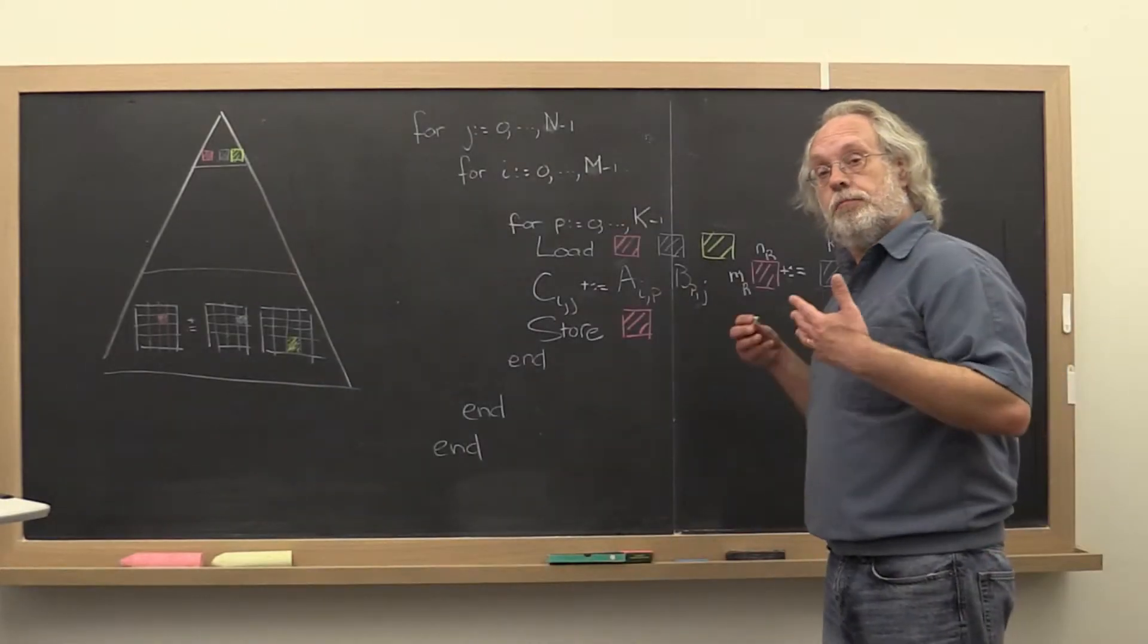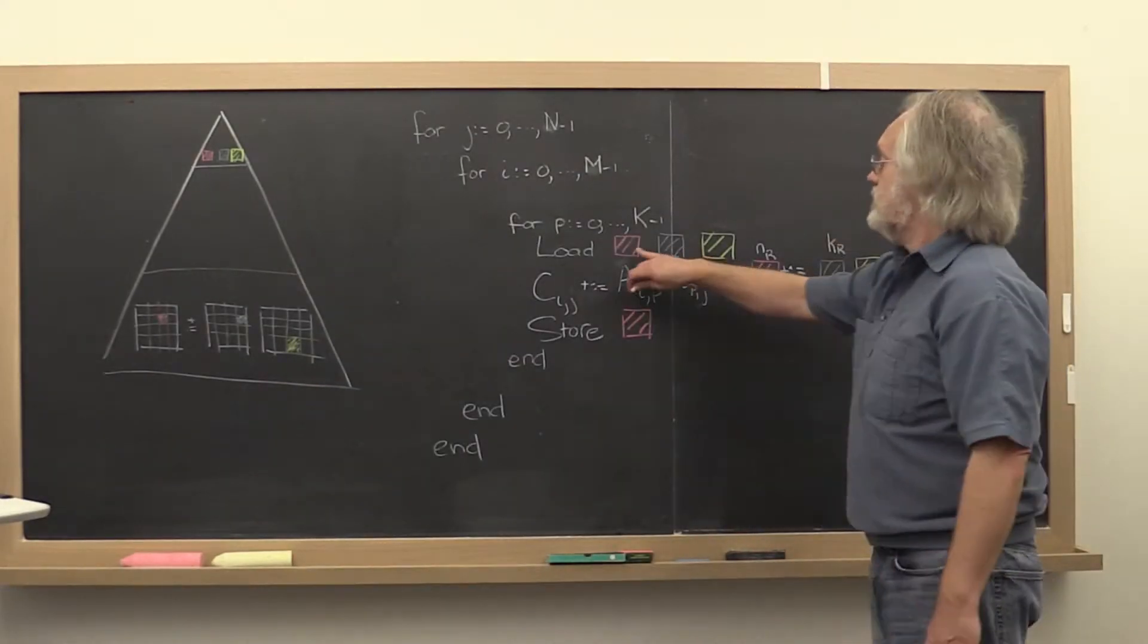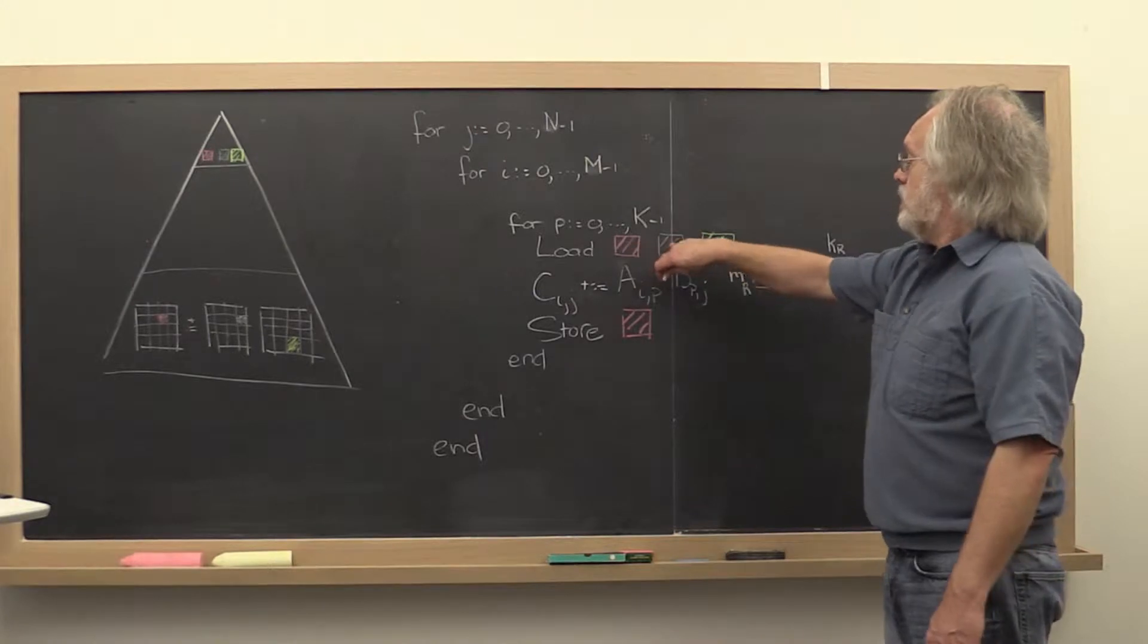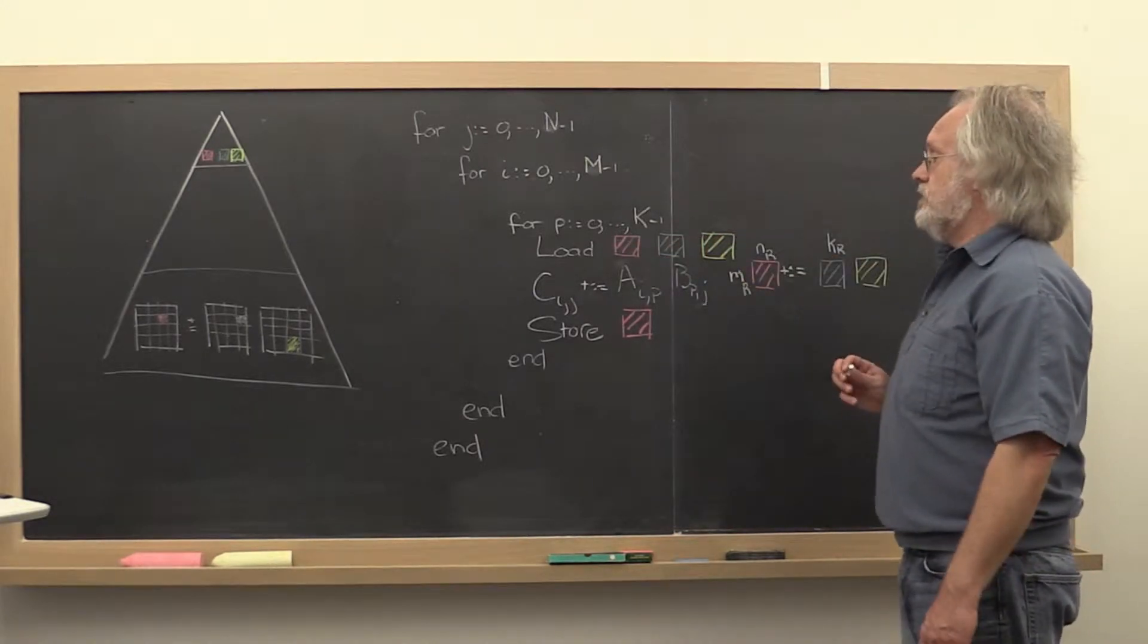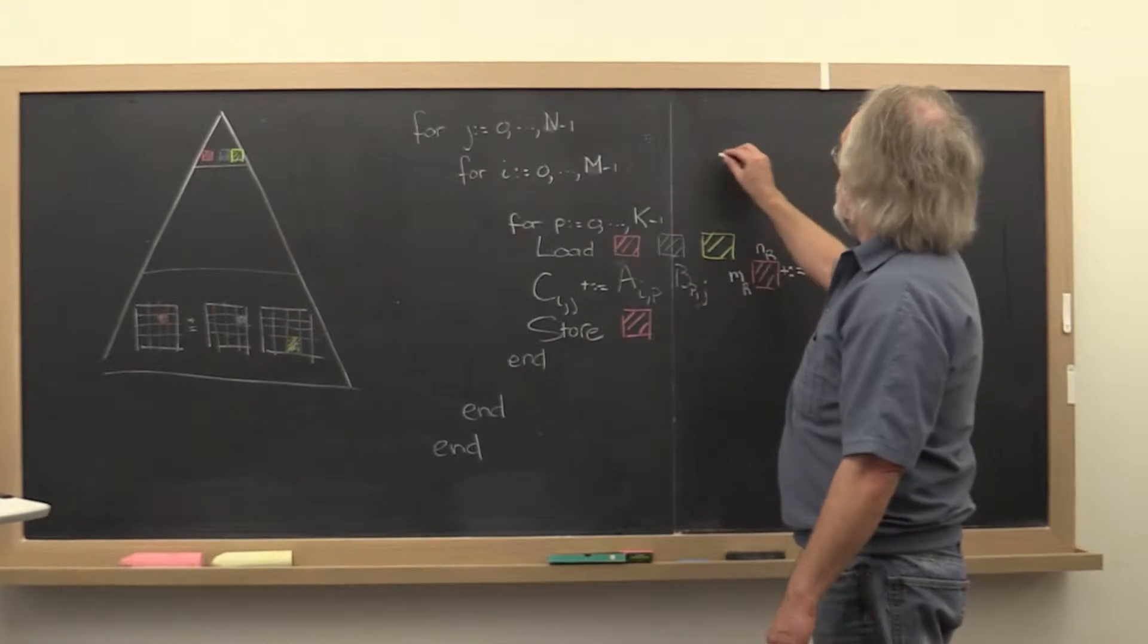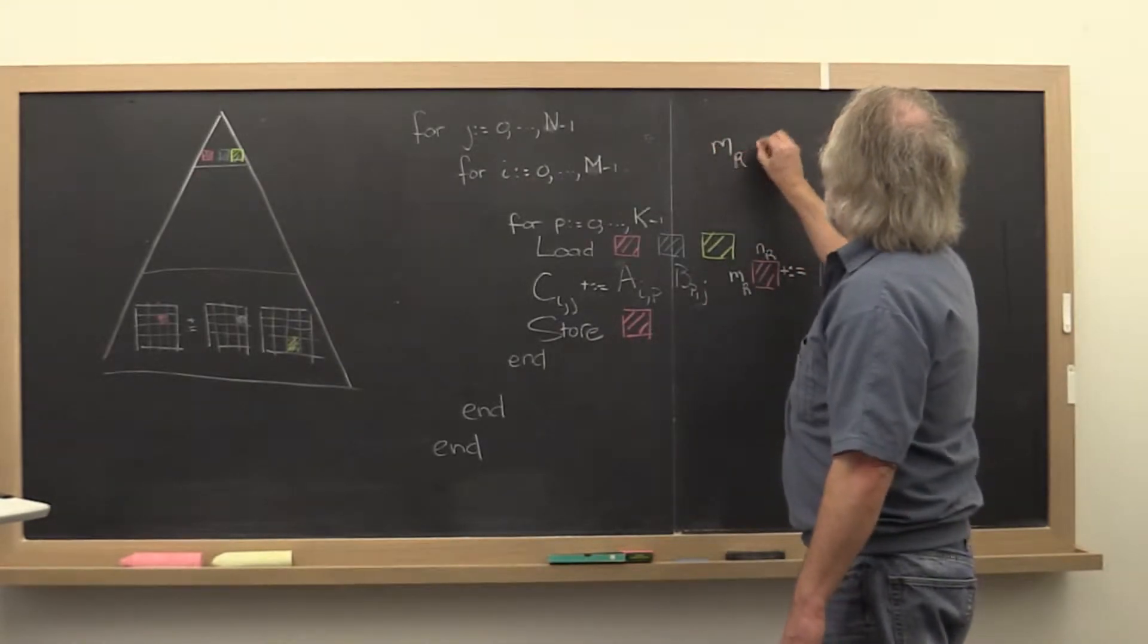So the cost of moving data around can be analyzed as follows. Let's see. What does it cost to load these three matrices? Well, the size of the first matrix is mr by mr.